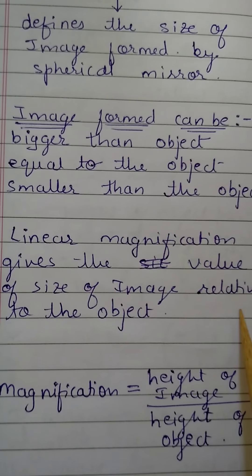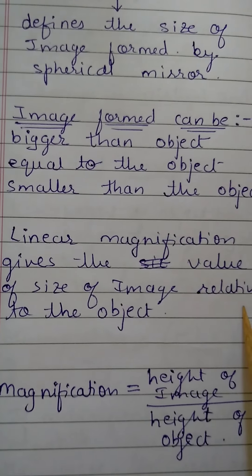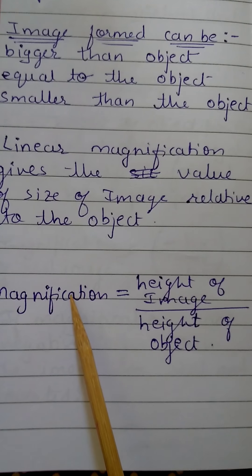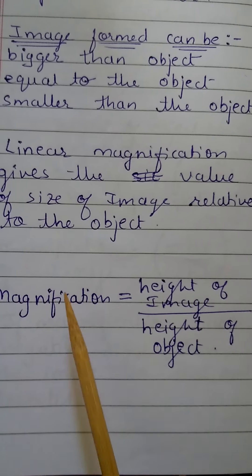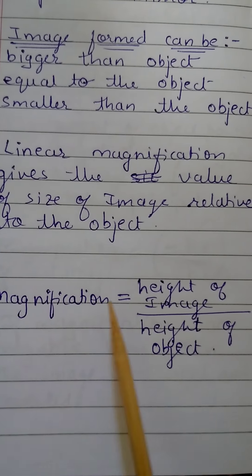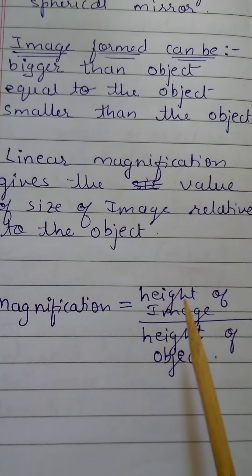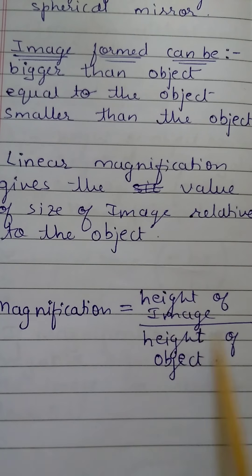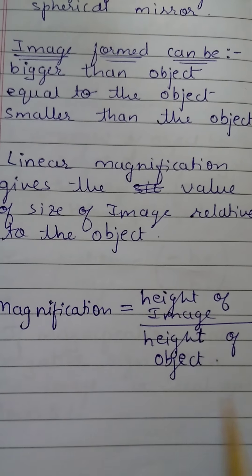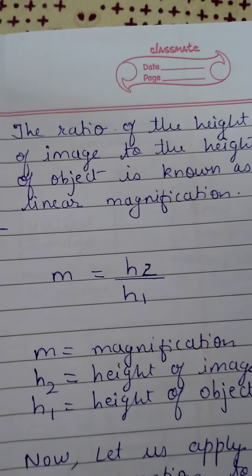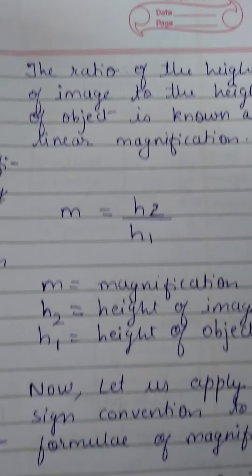Linear magnification gives the value of the size of the image relative to the object. Whatever the size of the object is, accordingly the size of the image will change. Magnification means enlargement of the image. The magnification formula is height of image upon height of object — that ratio gives the magnification value. So how much long the image will be, that is what we mean by linear magnification.